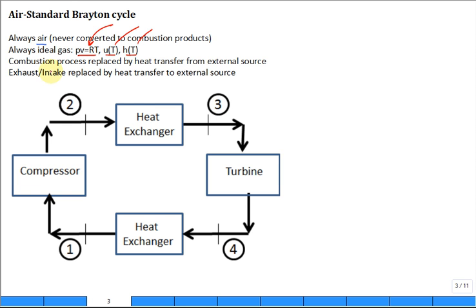Now the combustion process is replaced by that heat transfer as I described from an external source. And the exhaust here and intake here were replaced by a heat transfer to an external source. You could put that as an in and you know it's going to be a negative in. Just like you put the work out of the compressor and you know that's going to be a negative out work. But a turbine is positive work out and this is a positive heat transfer in.